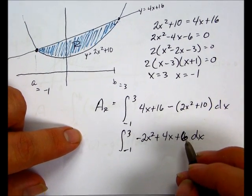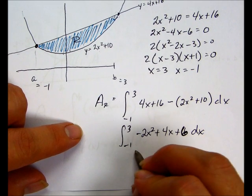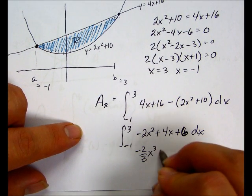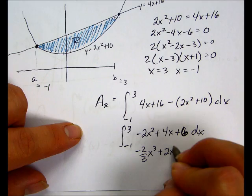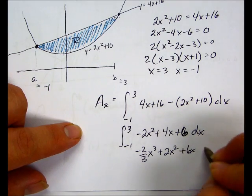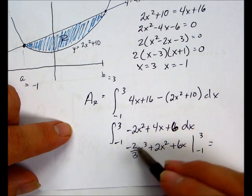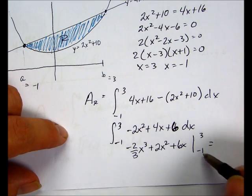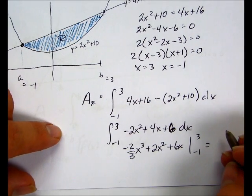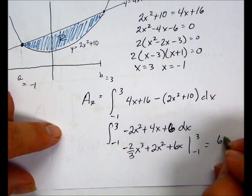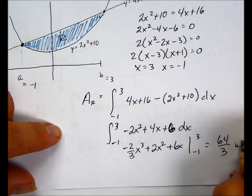So we're doing the anti-derivative here, and we're going to get negative 2 thirds x cubed plus 2x squared plus 6x evaluated from negative 1 to 3, plug in 3, subtract, plug in negative 1, and you're going to end up with 64 thirds units squared.